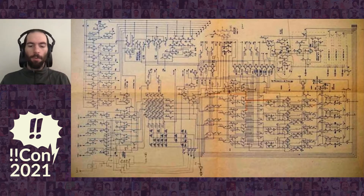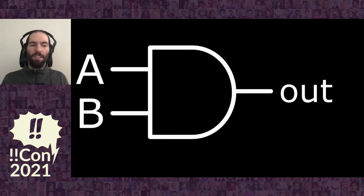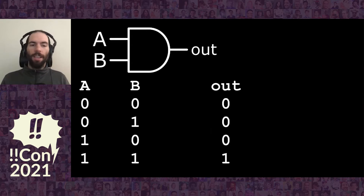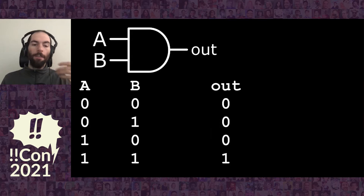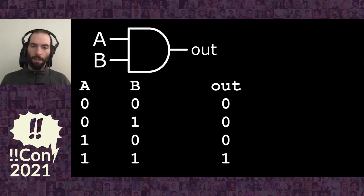For example, we can have here just an AND gate. All an AND gate is, it's just a function that takes two inputs and returns one output. If both of the inputs are one, then the output is one; otherwise the output is zero. So only in the configuration one-one do you get output one.